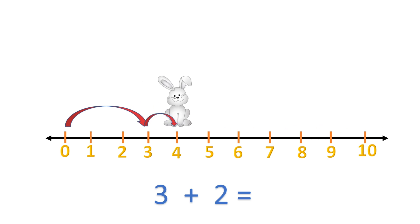One, two. The answer is five. Rocky landed on five. Three add two equals five.